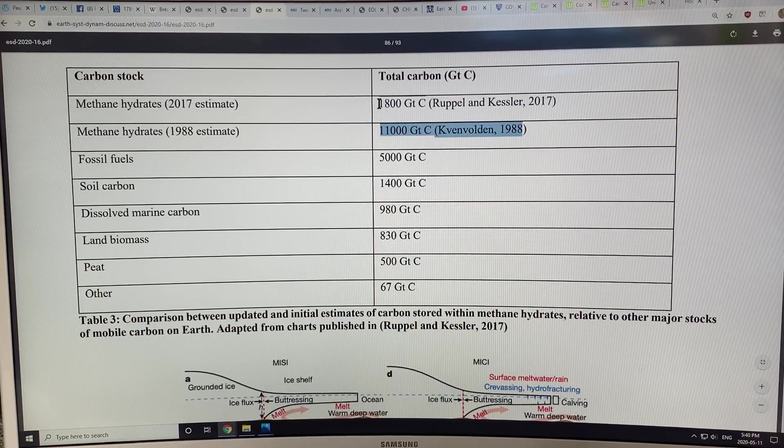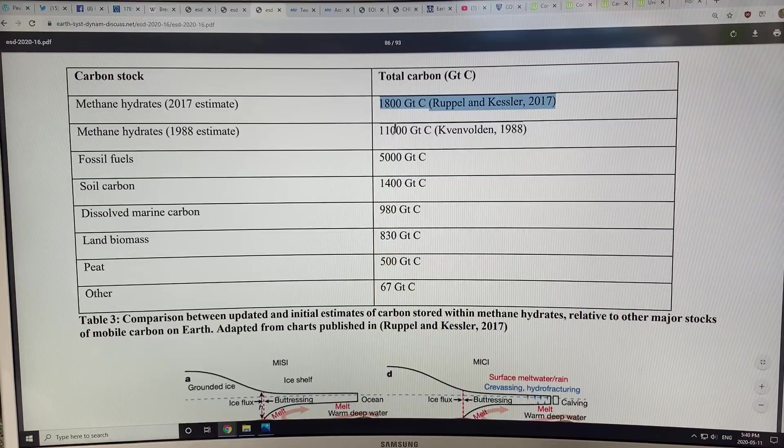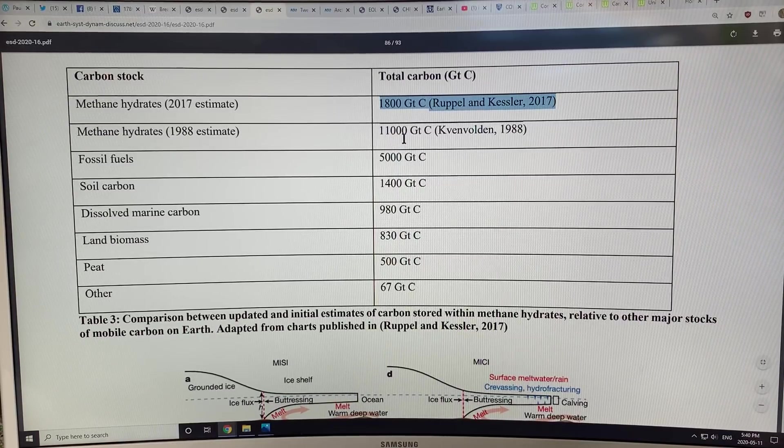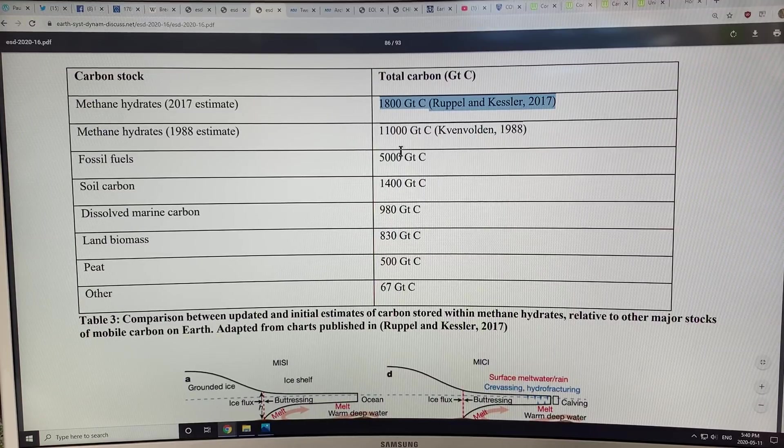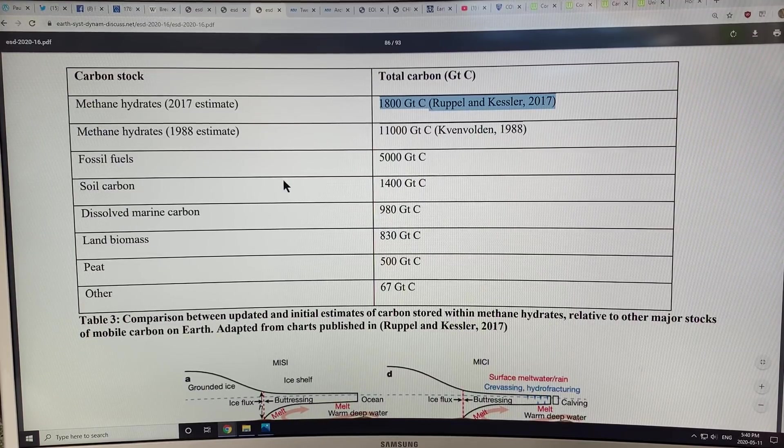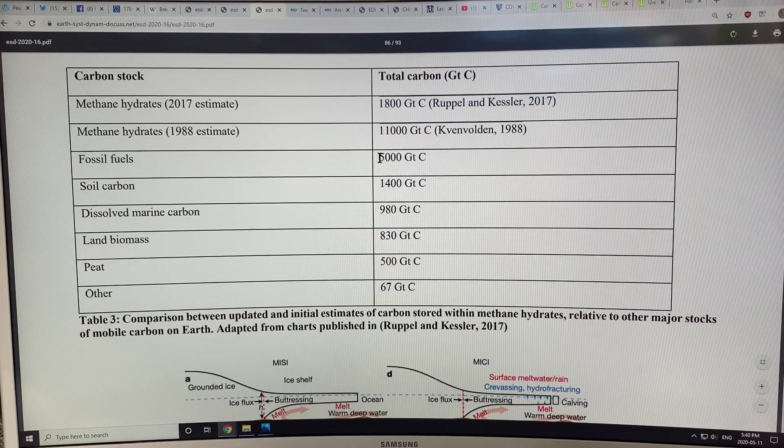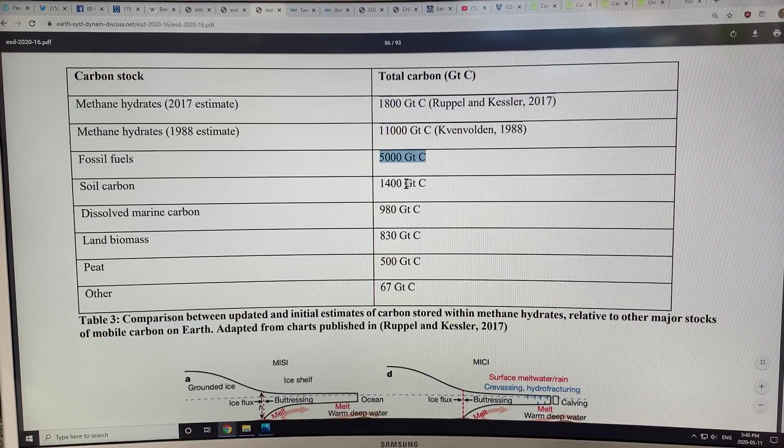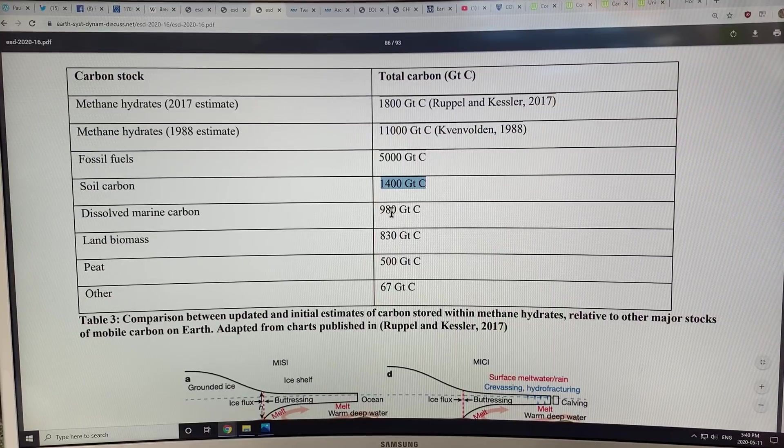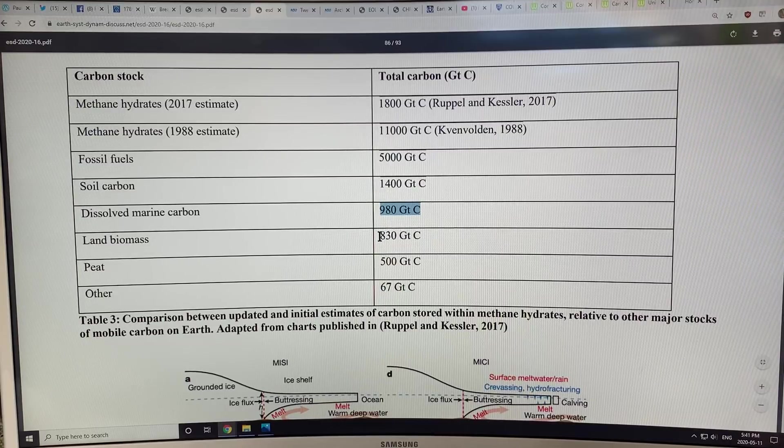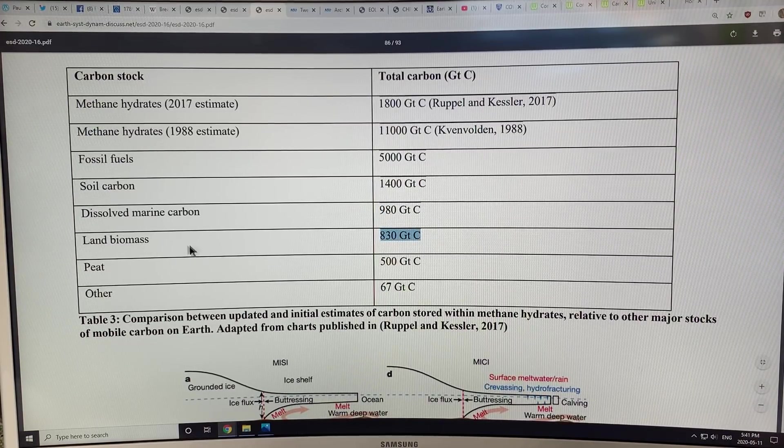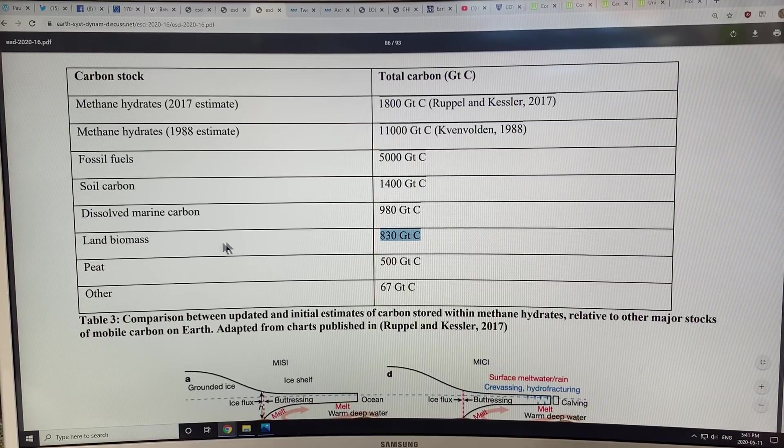This new paper shows a lot lower, five or six times lower amounts of carbon in the methane hydrates. Fossil fuels for comparison is about 5,000 gigatons of carbon. Soil carbon about 1,400, dissolved marine carbon 980, land biomass—this is the plant matter and animals on the surface of the earth—about 830 gigatons of carbon.